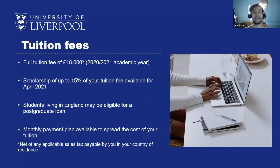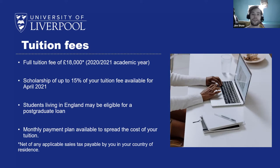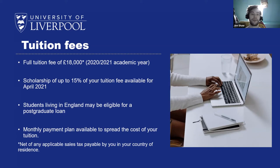In terms of tuition fees, the standard fee is £18,000 for the current academic year. There is a 15% scholarship for students studying in the April intake — nothing you need to do to apply, as all students are eligible and it will be automatically reduced on your payment plans when you get your offer letter. Students living in England may be eligible for a postgraduate loan from Student Finance England to help part-fund some tuition fees. We also have monthly payment plans available so payments can be spread in equal monthly installments throughout the entire duration of the program.